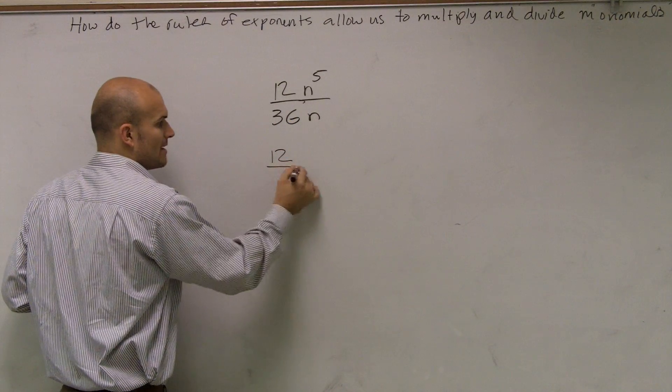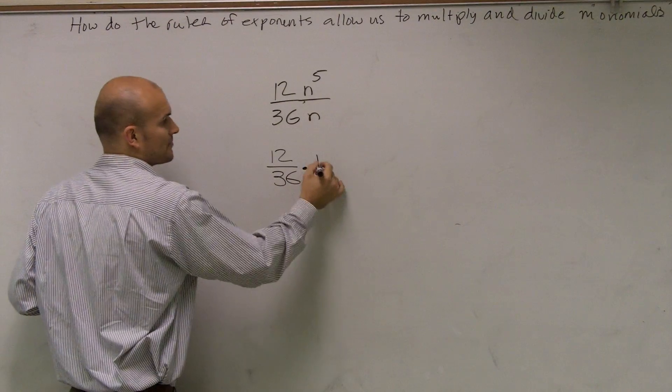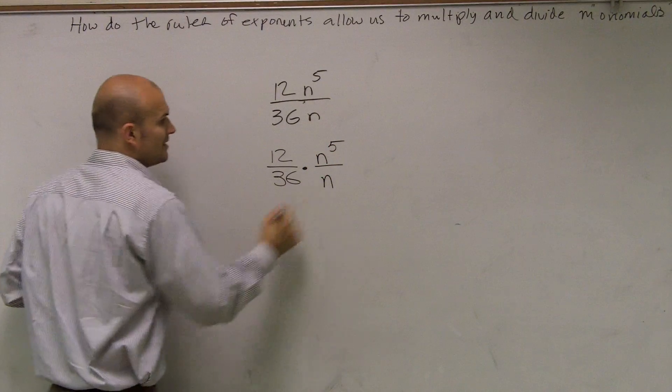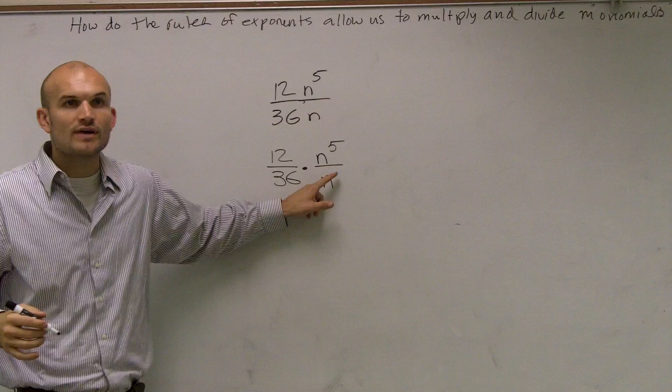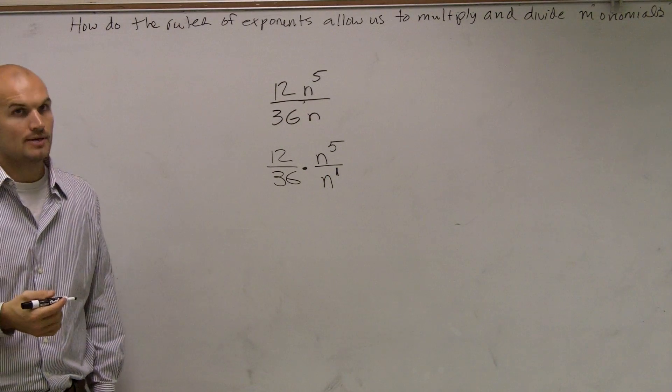So really what this is, you guys can think about it: 12 divided by 36 times n to the fifth over n. And remember, if there's no exponent written up there, we can always write it as n to the first exponent.